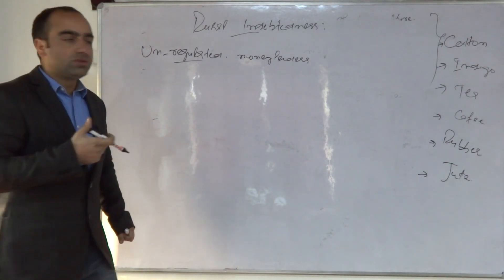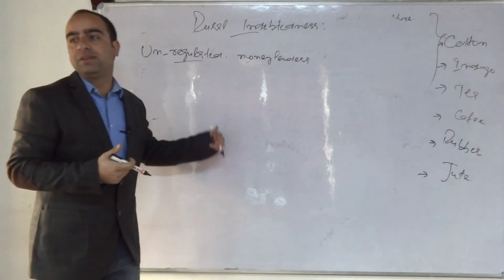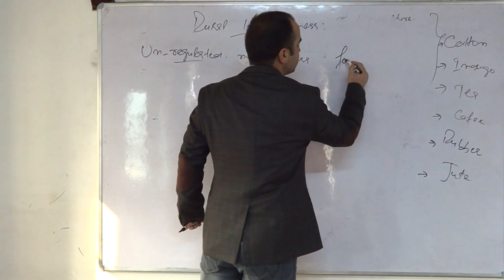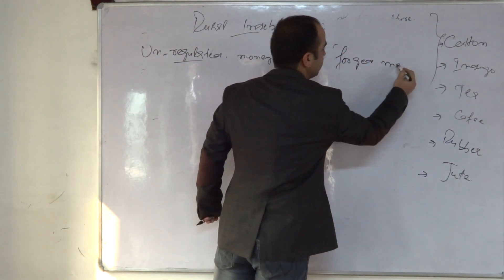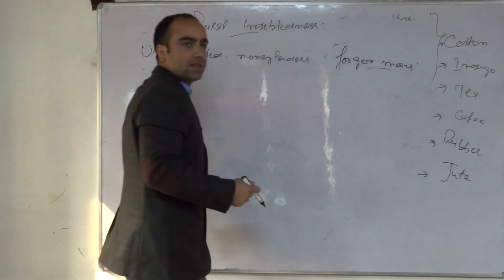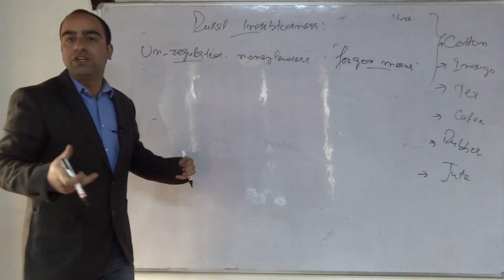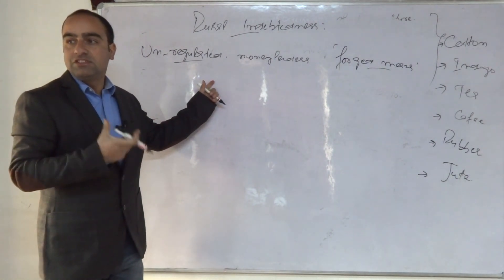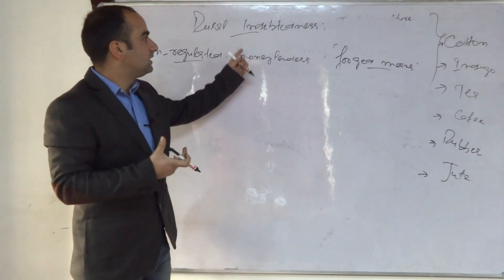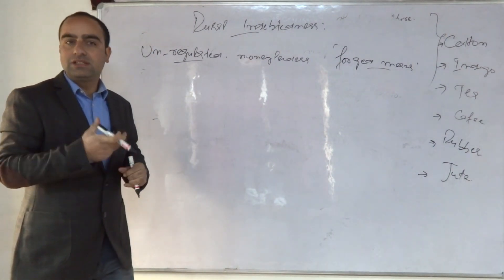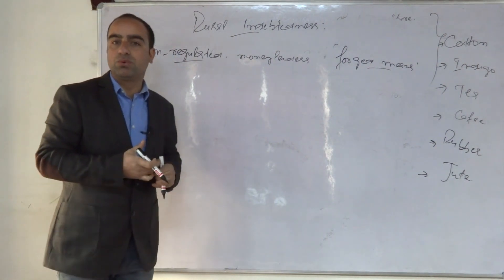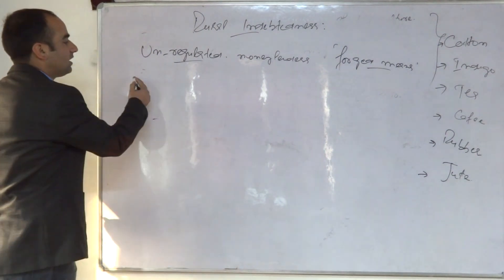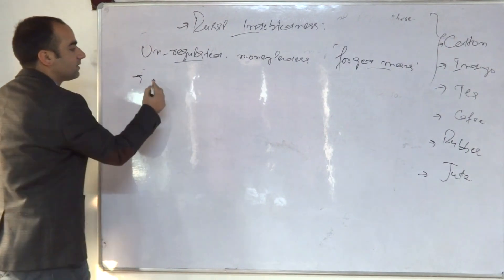Due to the illiteracy and ignorance of the Indian peasant, and through various forged means including forged signatures, the Indian peasant was thrown into the trap by these sahukars, mahajans, and moneylenders. This led to indebtedness - karazdari - which proved very horrible for the Indian peasant and the Indian cultivator.